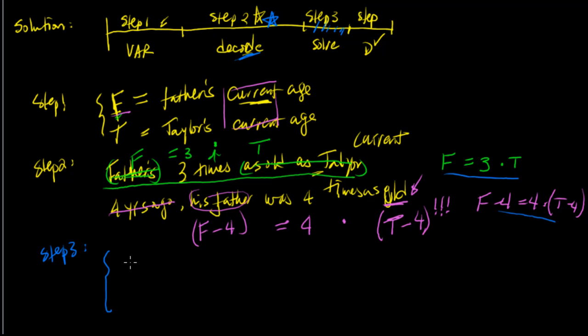All right? Now arithmetically, what we have leftover is really just solving the equation. We have F minus four is equal to four times T minus four. Obviously, from here, looking at this equation, what would make sense is substituting in this F equal to three T back into this, and then we would have an equation, one equation with a variable of T in it. Okay? Let's proceed.